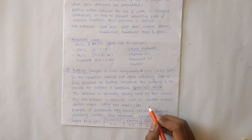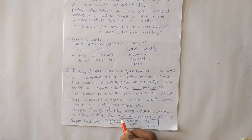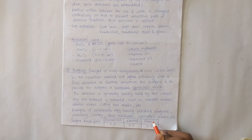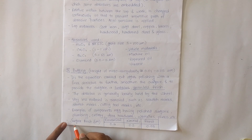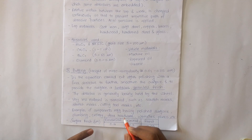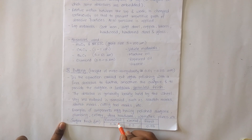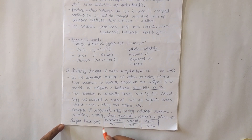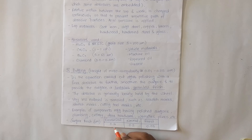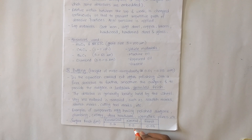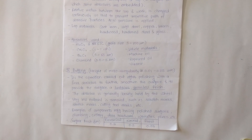Examples of components with buffed surfaces include plumbing fixtures, cutlery, door hardware, wrenches, and pliers. In terms of surface finish, the buffing process can economically generate 0.4 micrometer surface finish. Surface finishes from buffing are categorized as three levels: economical at 0.4 micrometer, normal at 0.2 micrometer, and finest at 0.05 micrometer.